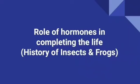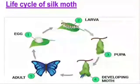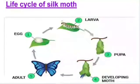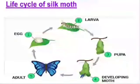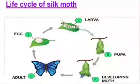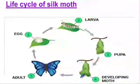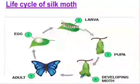Let's start our first topic: role of hormones in completing the life history of insects and frogs. The next picture shows the life cycle of the silkmoth. We have already learnt about the life history of the silkmoth and the frog. The caterpillar has to pass through various stages to become an adult moth. The first stage of the life cycle of silkworm is an egg, which is laid by a female moth. It lays more than 350 eggs at a time. And after that, the growth of silkworm starts.